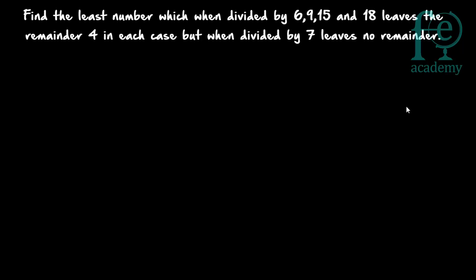Welcome to today's class. Today's question is: find the least number which when divided by 6, 9, 15, and 18 leaves the remainder 4 in each case, but when divided by 7 leaves no remainder. So when this number is divided by 6, 9, 15, and 18, we will be getting a remainder of 4.